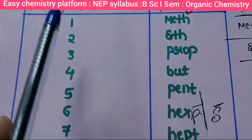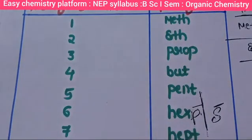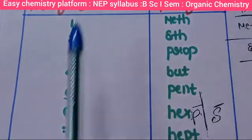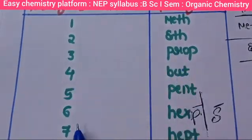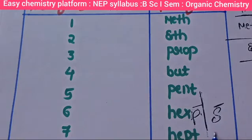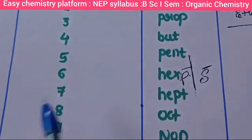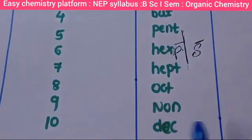For the number of carbon atoms, we use the following prefixes: one carbon — meth, two — eth, three — prop, four — but, five — pent, six — hex, seven — hept, eight — oct, nine — non, ten — dec.